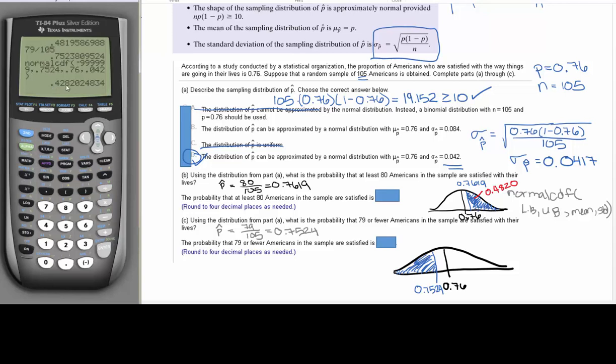And we're getting 0.4282. So this area is going to be 0.4282. So that would be the probability that 79 or fewer Americans in the sample are satisfied.